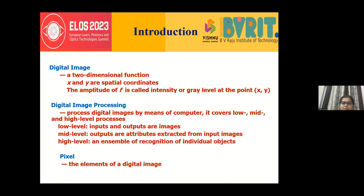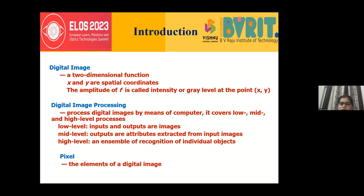A digital image is a two-dimensional function. A signal is one-dimensional, meaning only the x-axis is present, but an image deals with both the x and y axes. We use digital rather than analog due to complexity. Generally, considering x and y axes, every image has some intensity, represented as f — either called intensity or amplitude of the pixel levels.